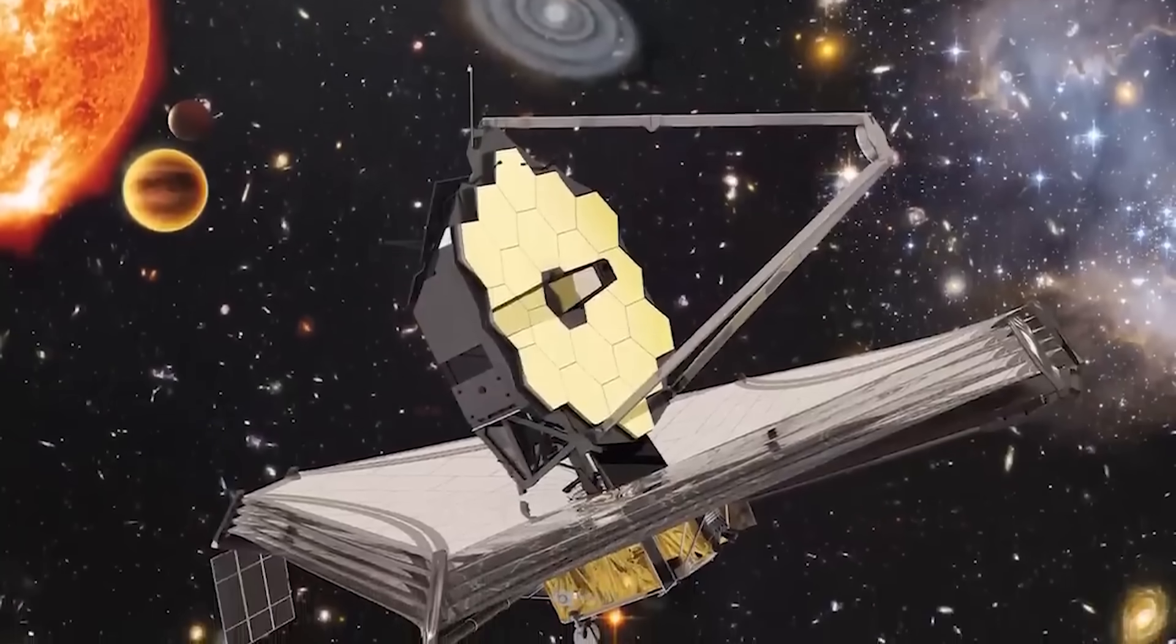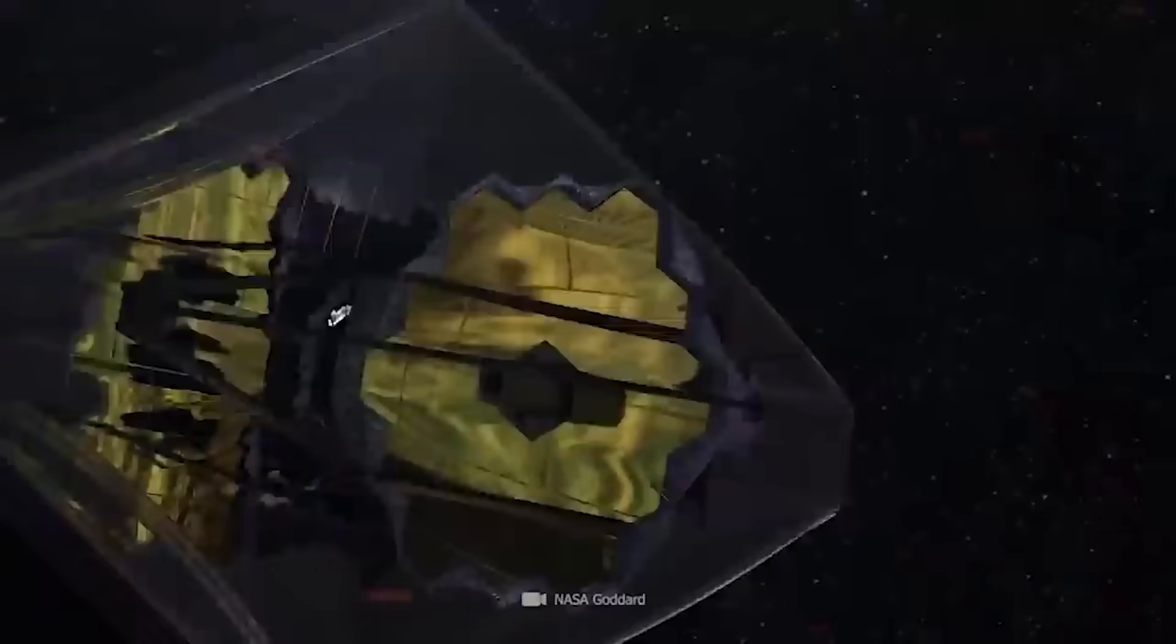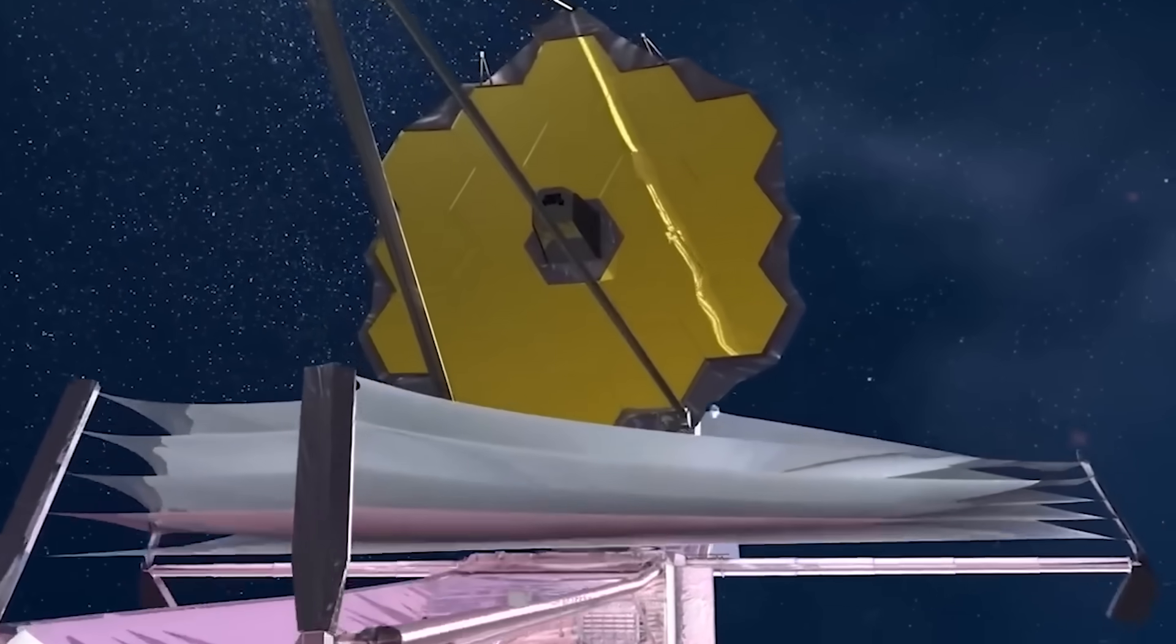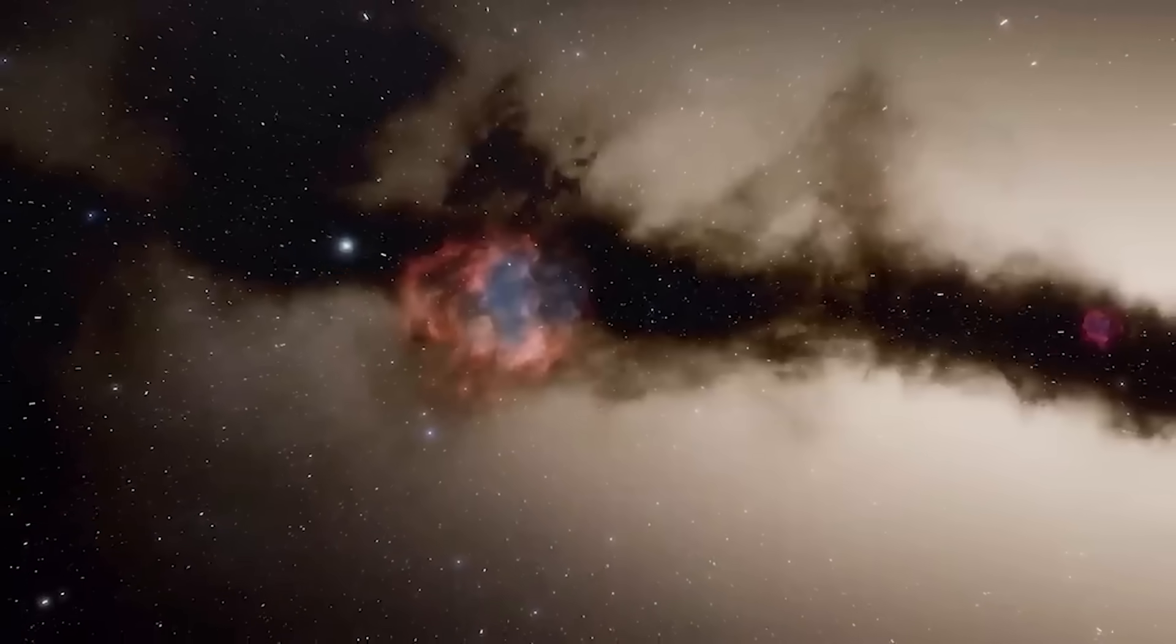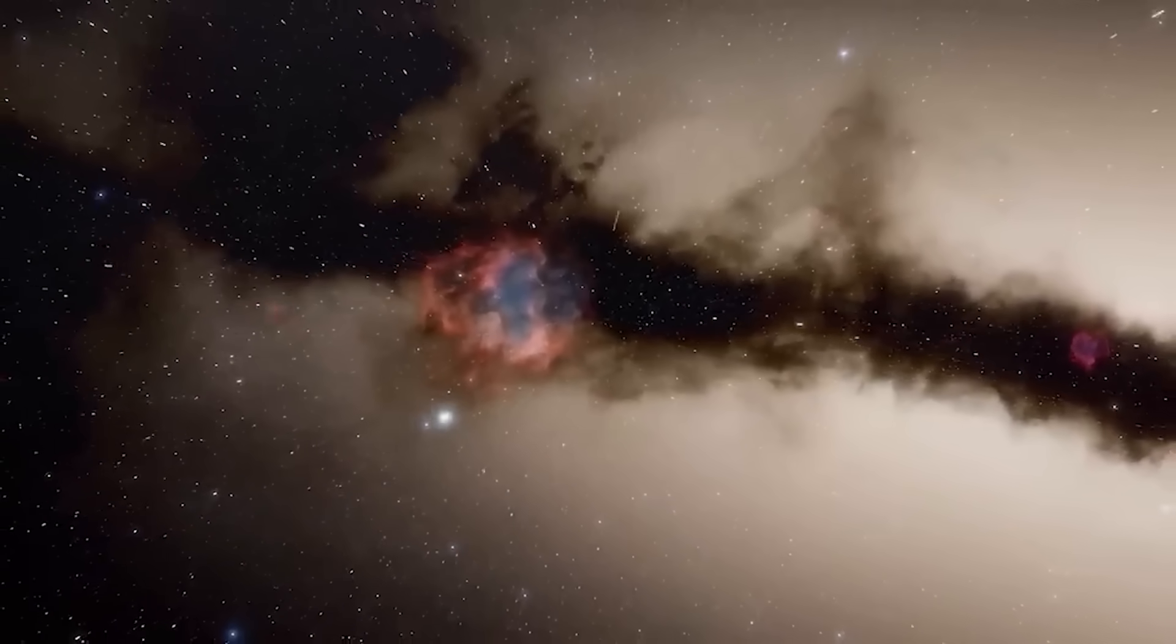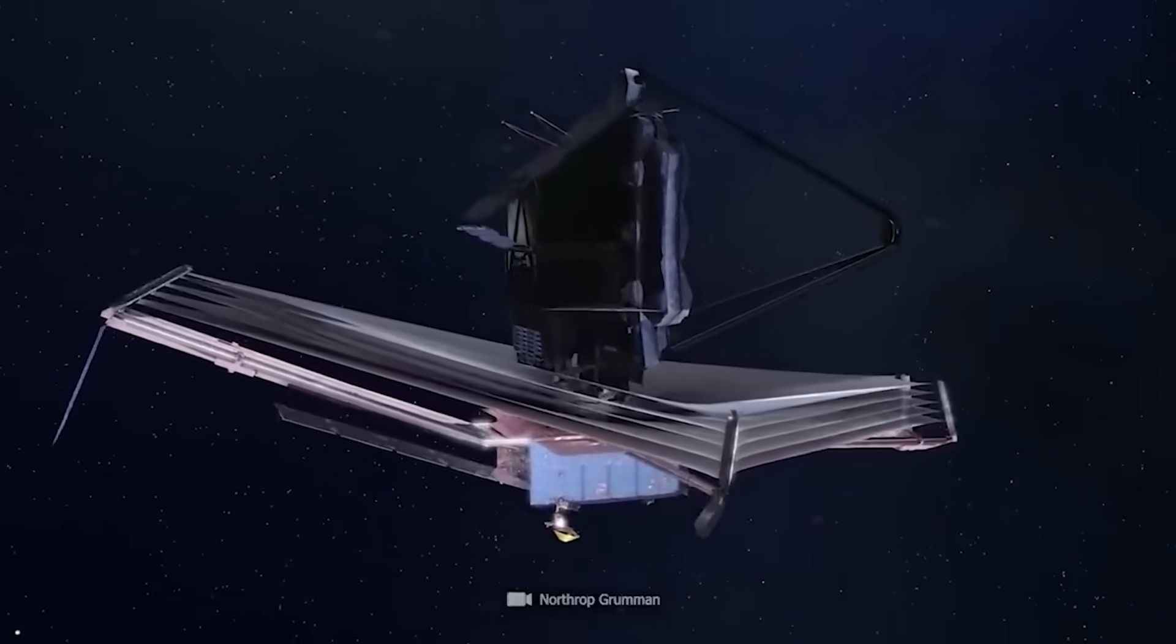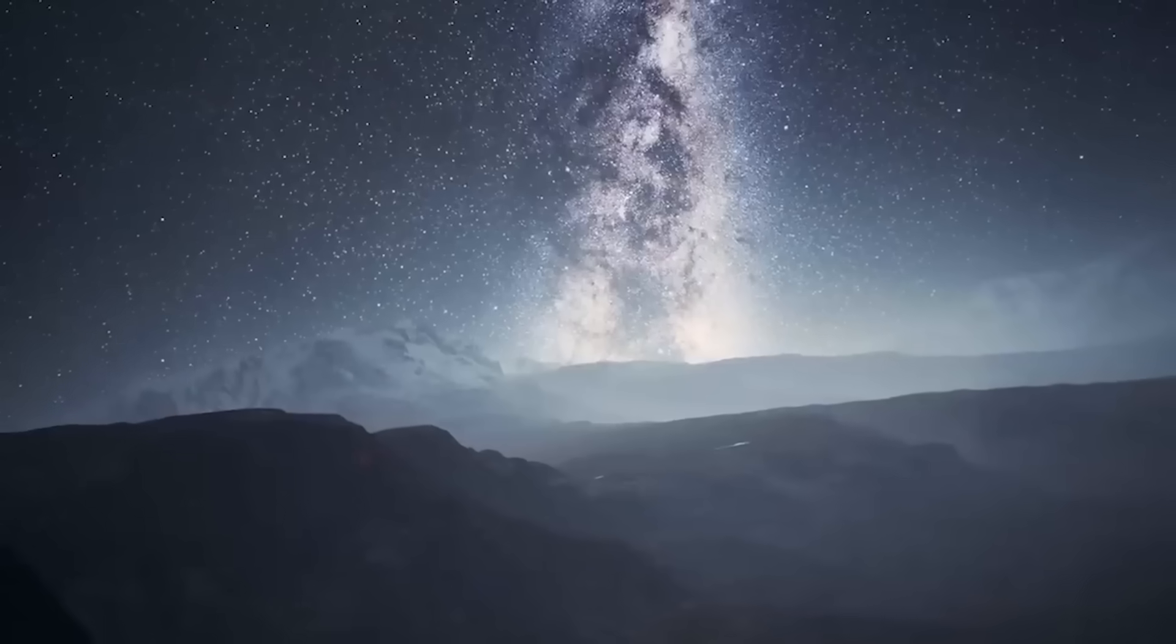The James Webb Space Telescope, renowned as the most advanced and powerful telescope to date, is on a mission to uncover the secrets of the universe's origins. Equipped with 16 honeycomb-shaped mirrors and cutting-edge infrared technology, this remarkable telescope captures light signals that have traveled to us for an astonishing 13.5 billion years. Already, it has made significant strides by discovering ancient galaxies.